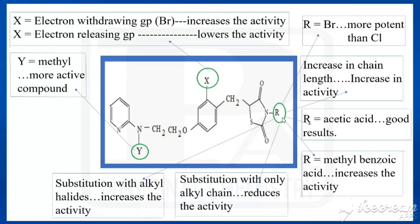Now come to R. In the place of R, putting bromine gives a more potent compound than chlorine. If we are increasing the chain length at R, the activity also would be increased. For R, if we are introducing acetic acid we are getting good results. In the place of R, putting methyl benzoic acid means the activity would be increased.